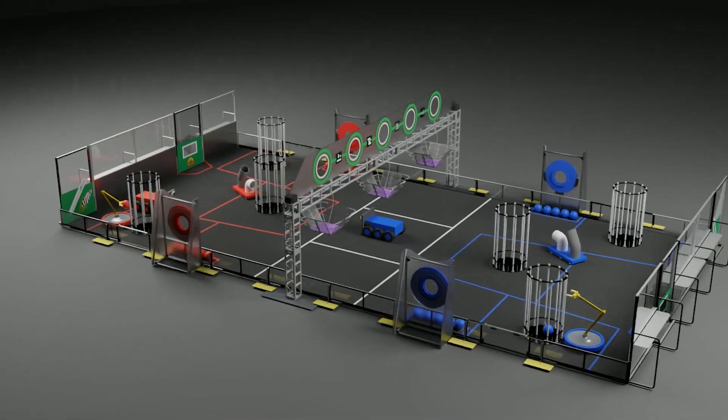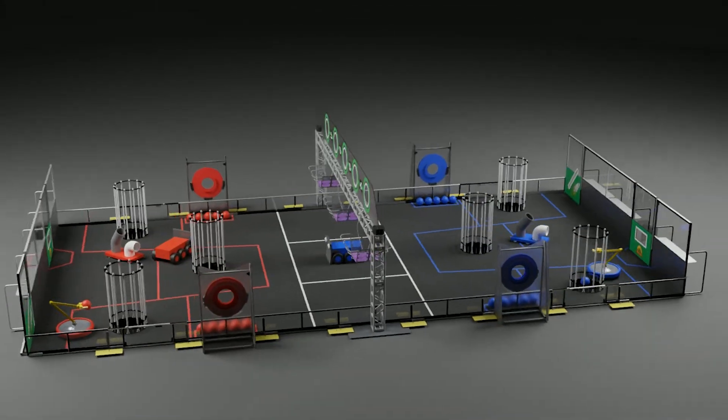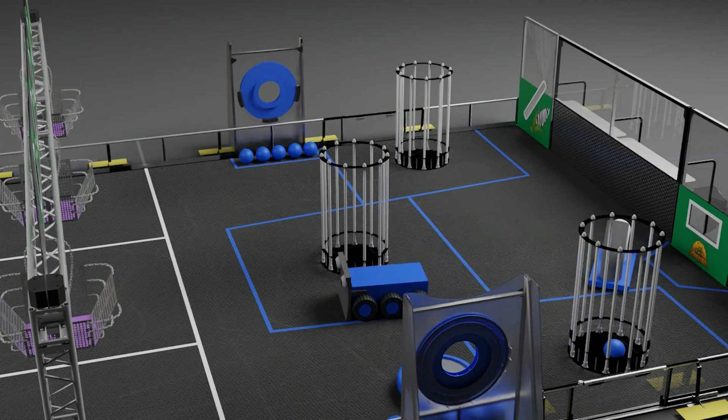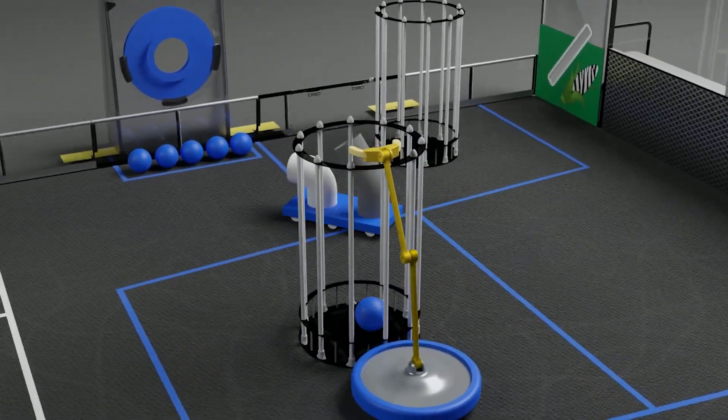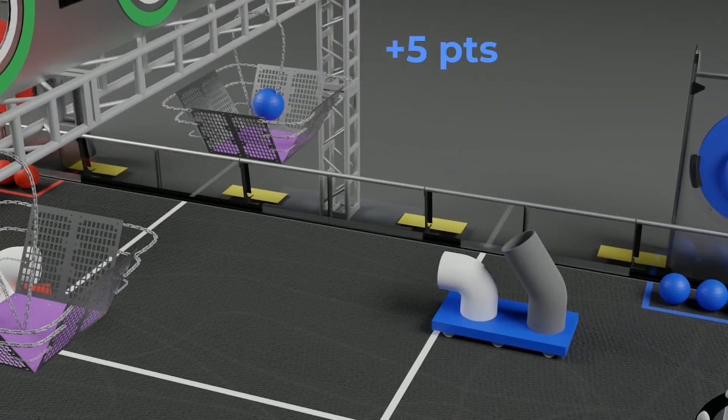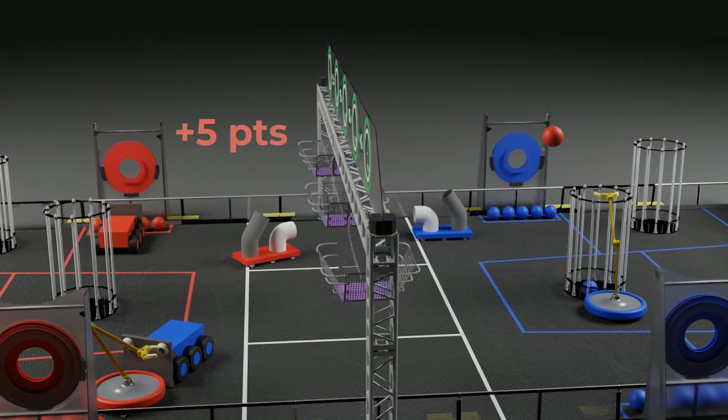For the next two minutes and 10 seconds, teams then enter the tele-operated period, where robots work together to fill silos with their crops, deliver crops to the farmers market, and process crops through the mills.